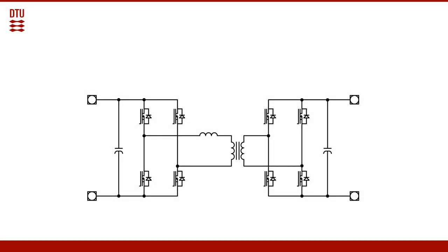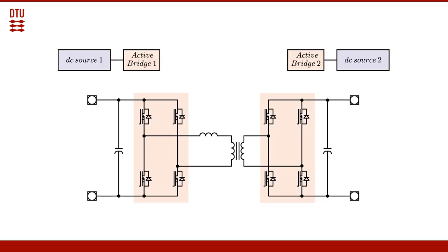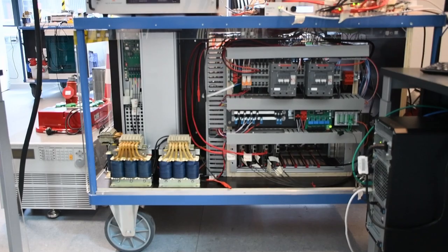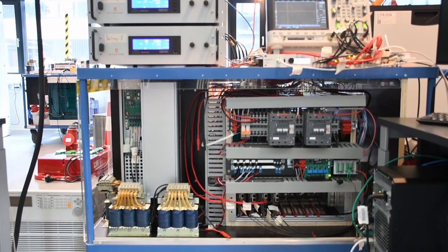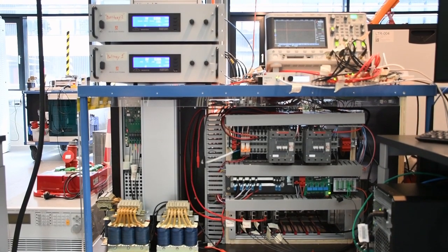In particular, the dual active bridge power converter consists of two active bridges interconnected by a power transfer inductance and a high-frequency transformer, providing bidirectional power flow capabilities, wide input-output voltage range, and high power density.